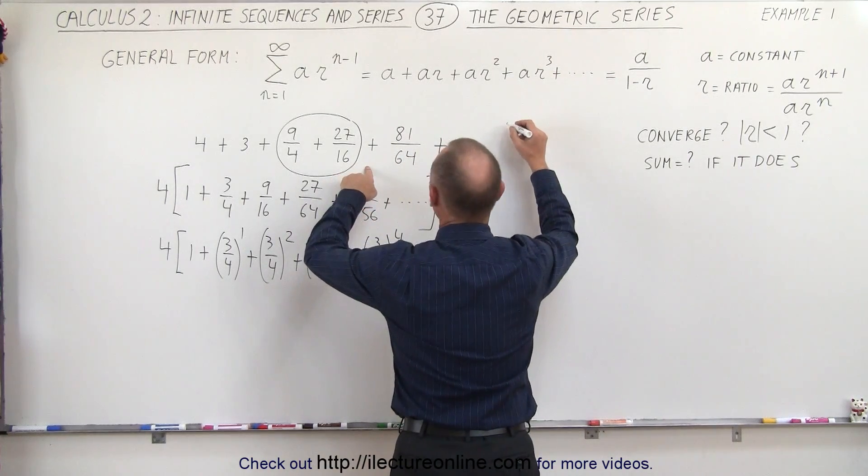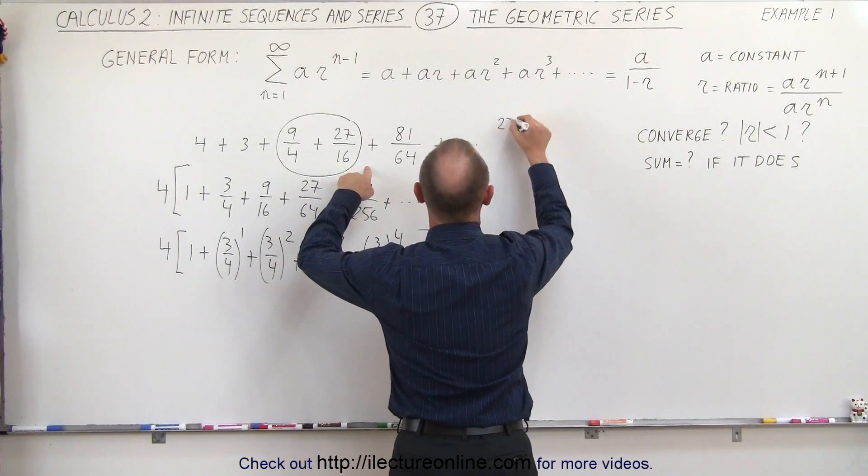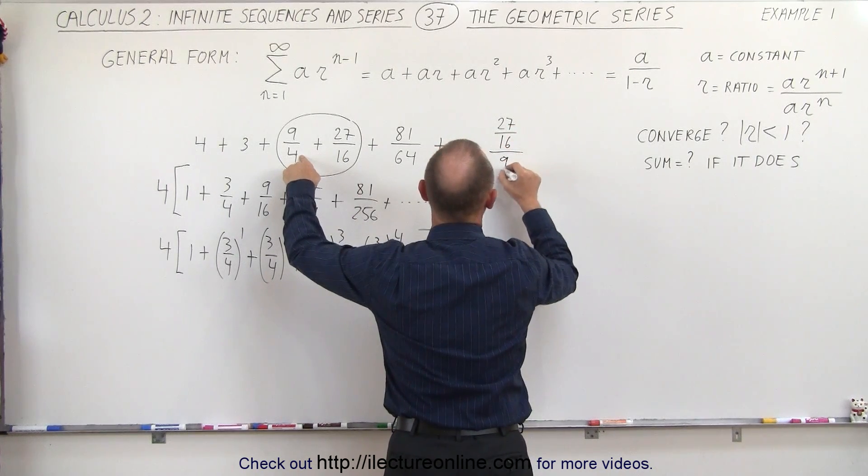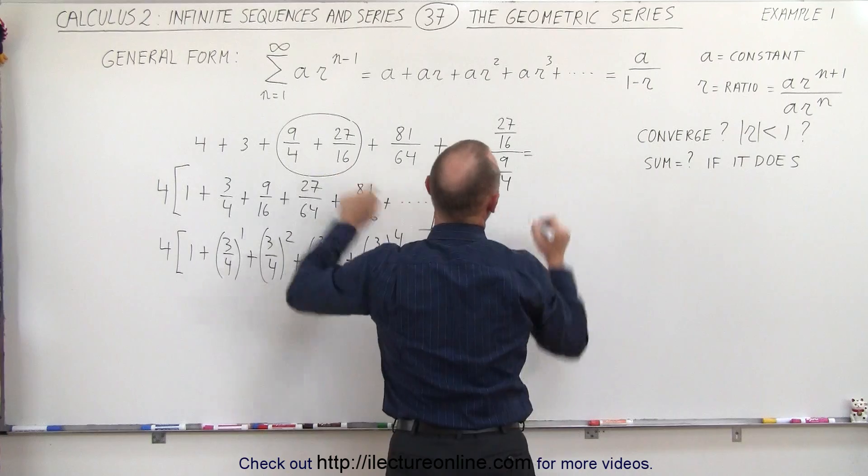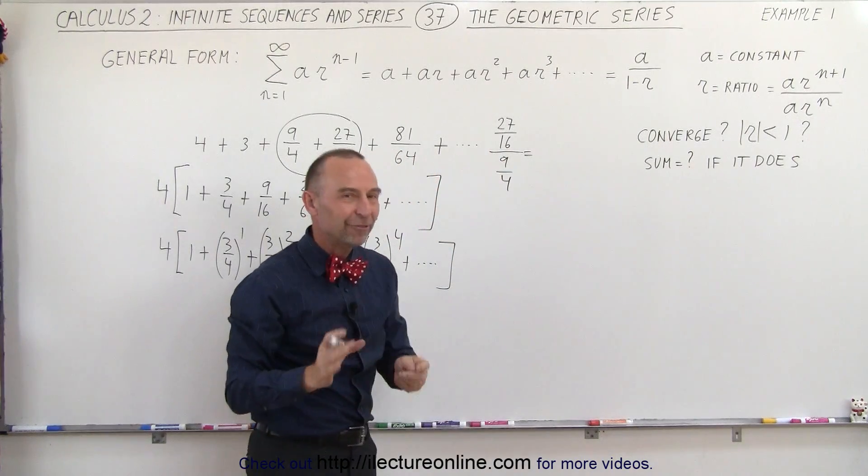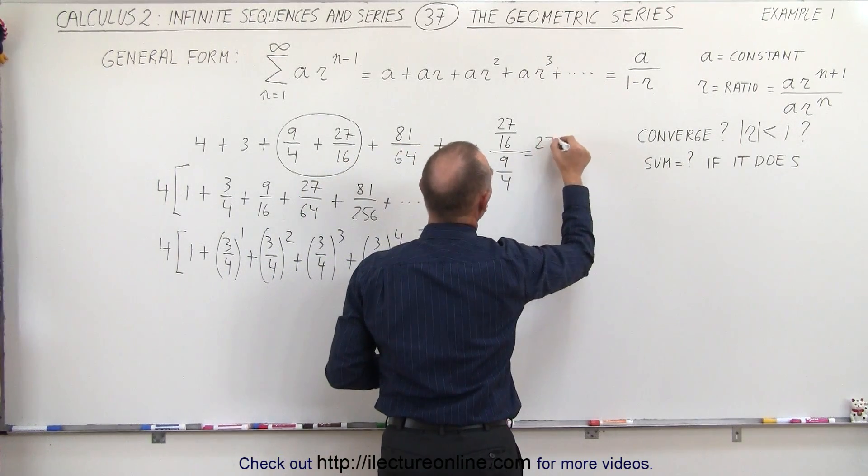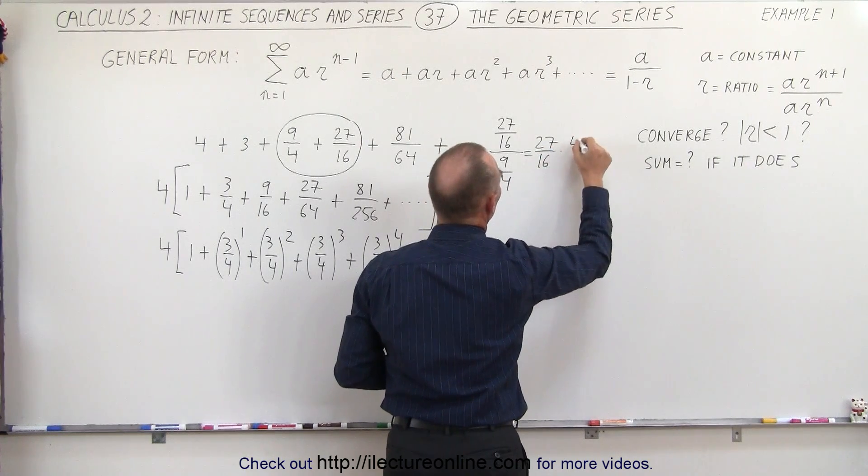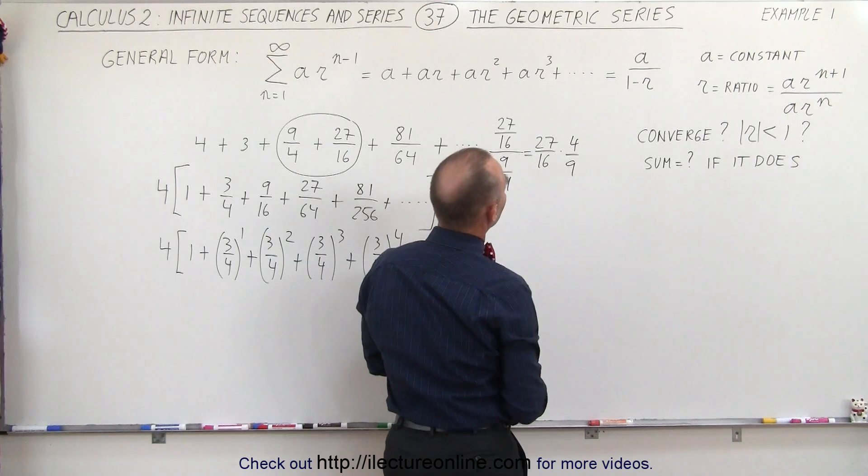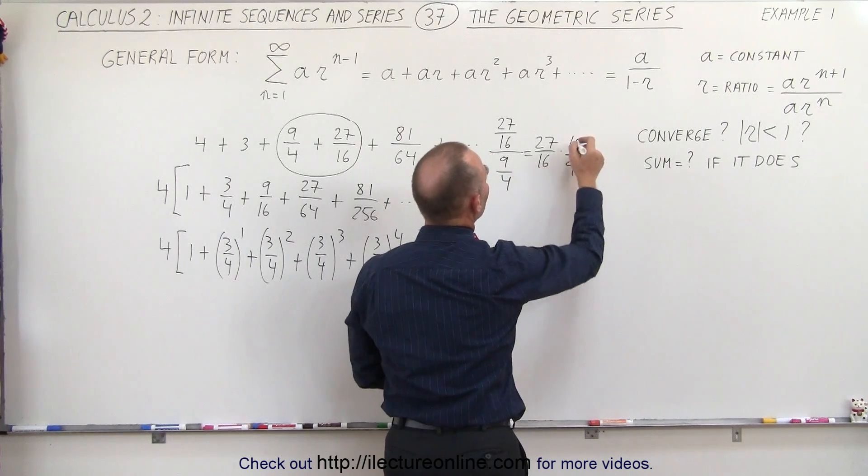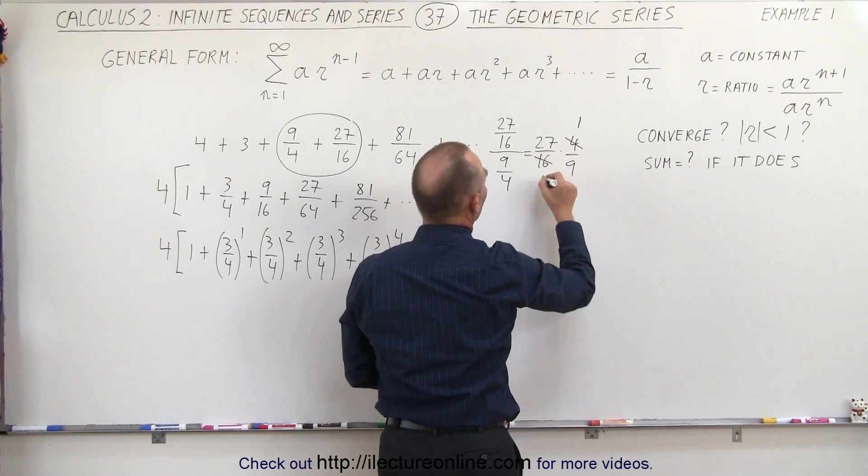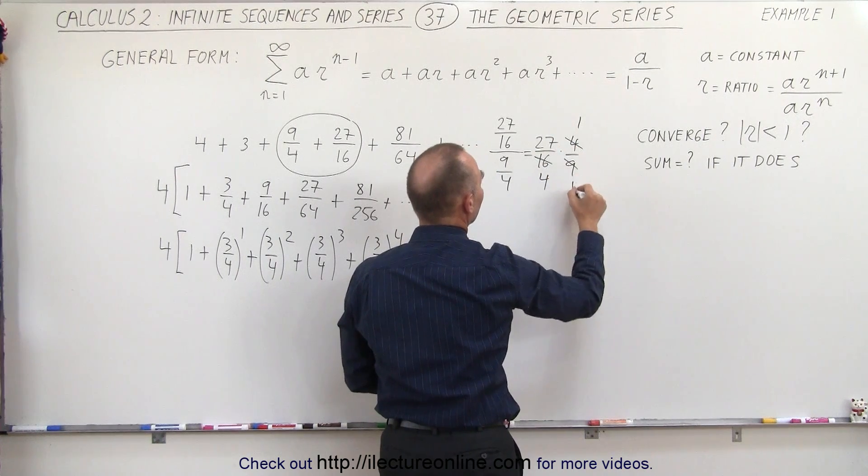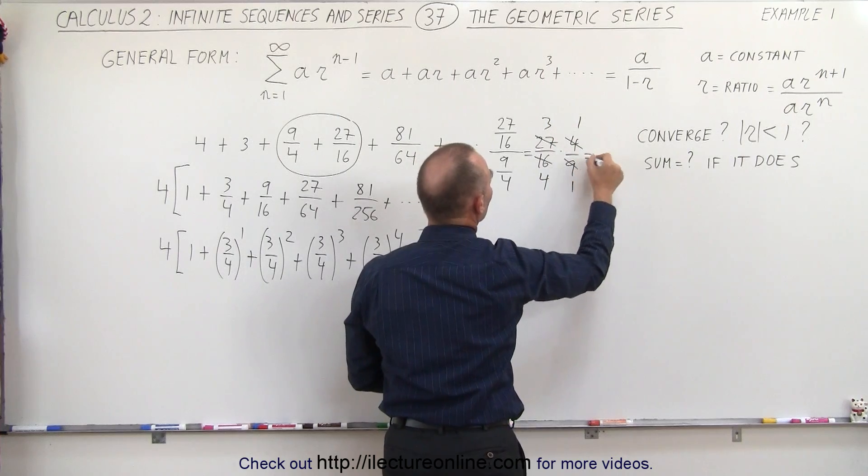So here let's divide the n plus 1 term, 27 over 16, by the previous term, 9 over 4, to see what the ratio is. And of course, we want to divide a fraction by a fraction. That is equal to the fraction multiplied by the inverse of the denominator, which is 4 over 9. We have 4 and 16, we can divide both by 4, that gives us 1 over 4. And 9 and 27, 9 goes in 27 three times, that gives us 1 and 3. So sure enough,